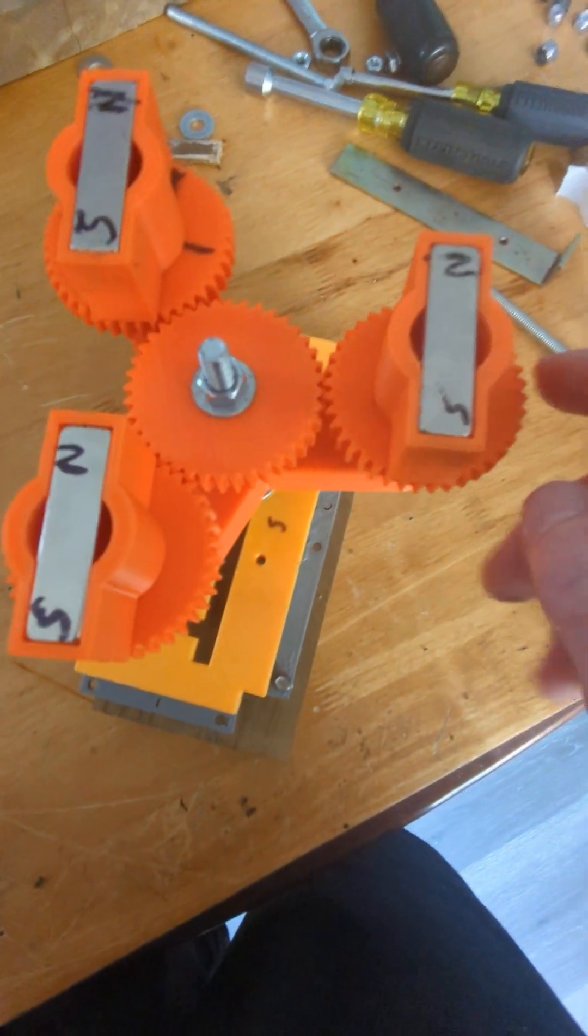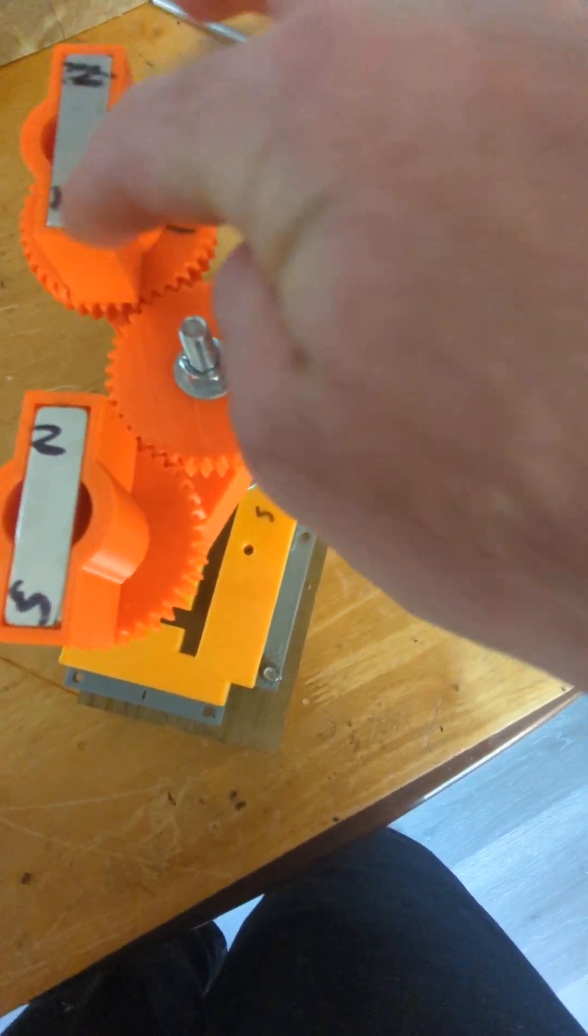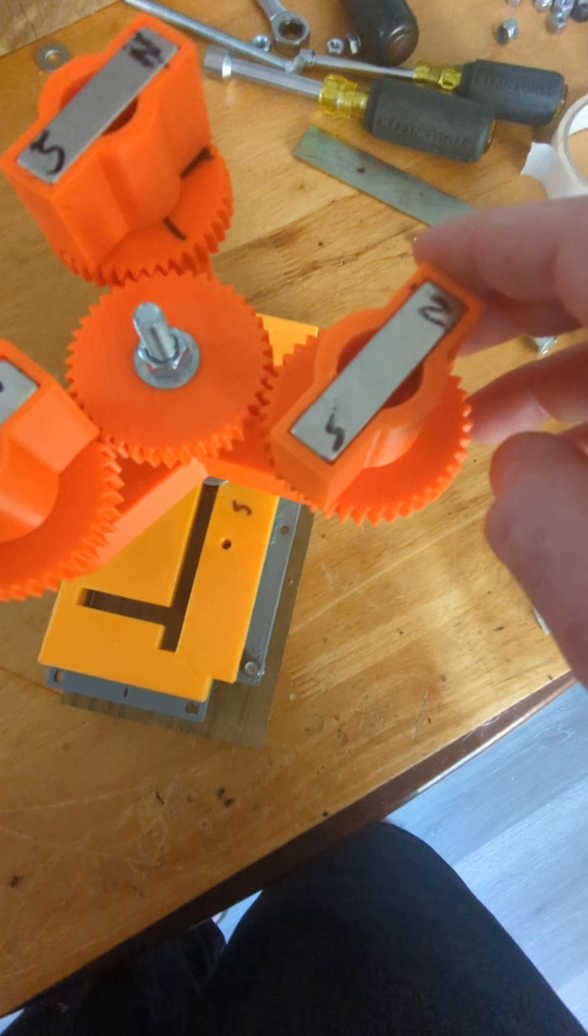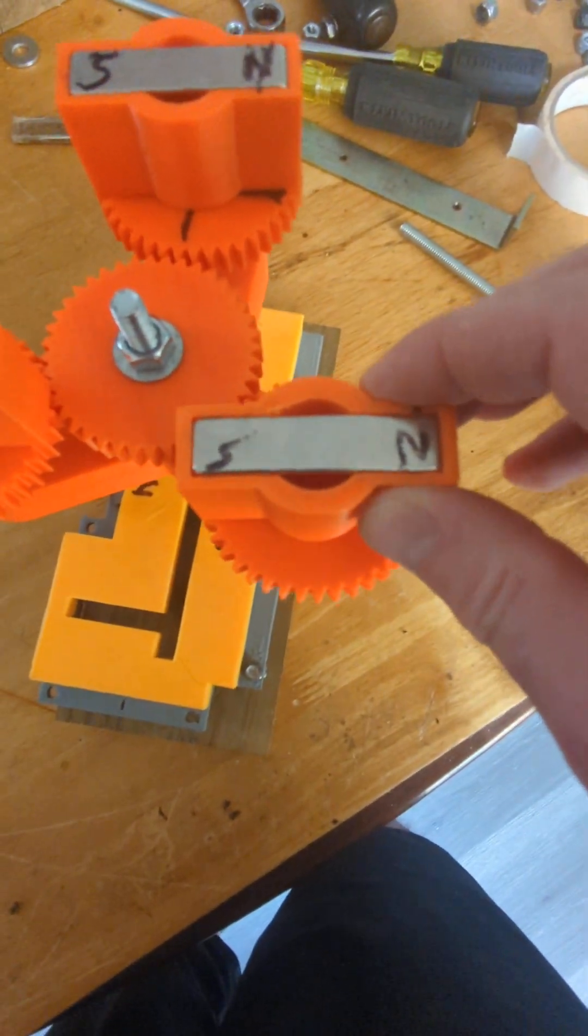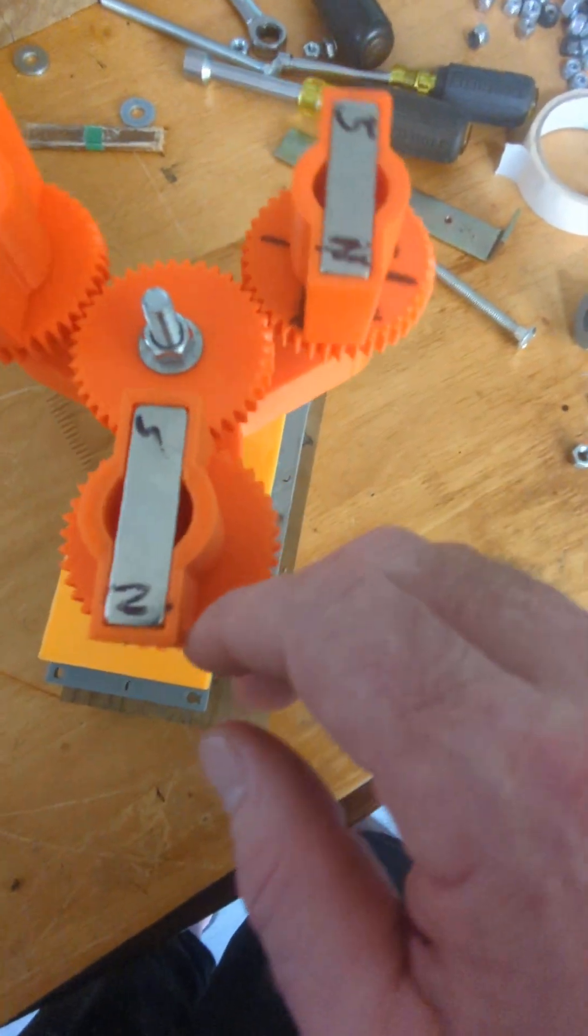Now remember, it's not 100% balanced because I have metal here which is attracting. This magnet's attracted to the metal more than these two, or these two are more than this one, and my geometry isn't that precise. This is just a test model.